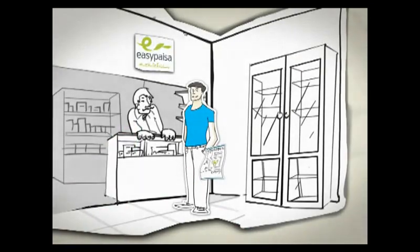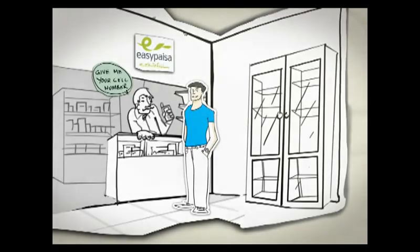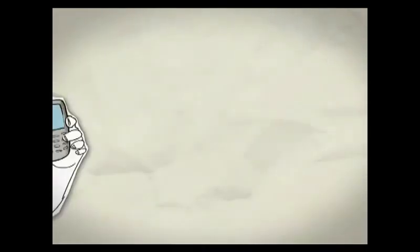He hands over the utility bill to the shopkeeper along with the payment. The shopkeeper inquires from Danish if he would like to give his cell number to receive the payment confirmation receipt via SMS.